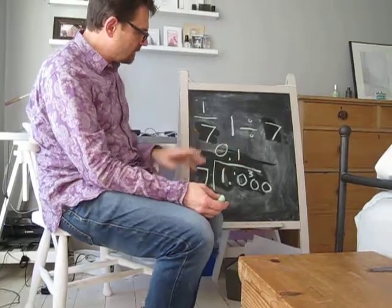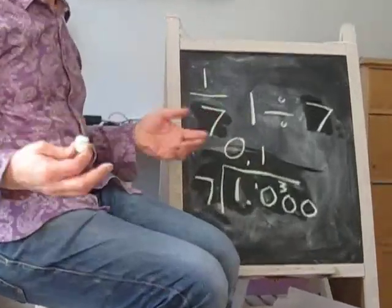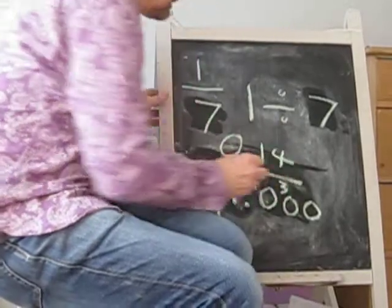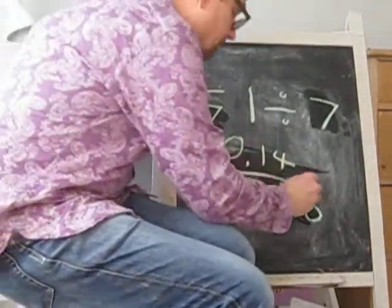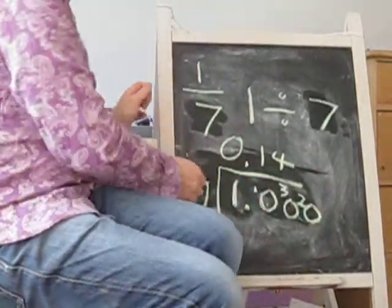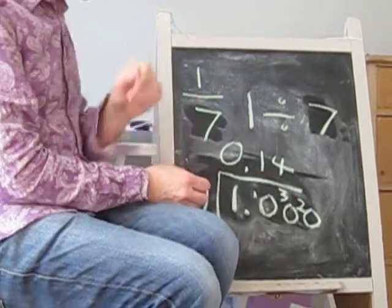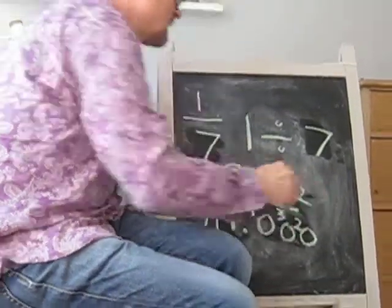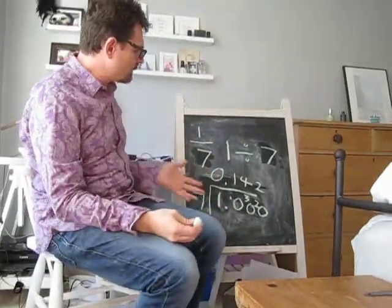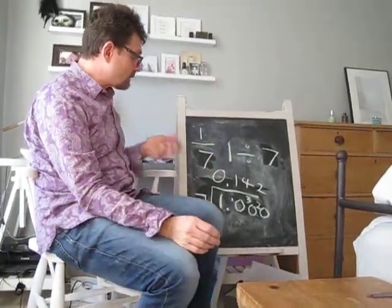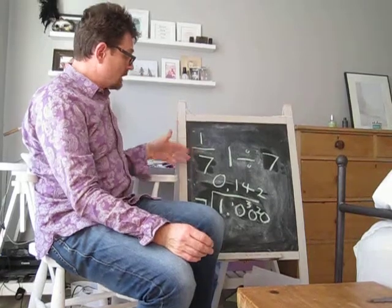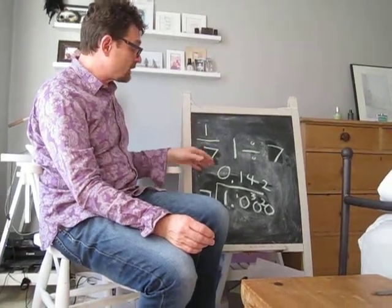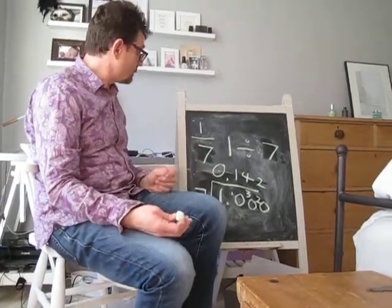How many sevens in 30? There are four with a remainder of two. And how many sevens in 20? There's two with a remainder of six. We can kind of keep on going, but you can see where we're going with this. The equivalent decimal to two decimal places is 0.14. That's the equivalent decimal to a seventh.